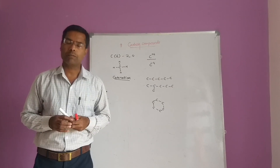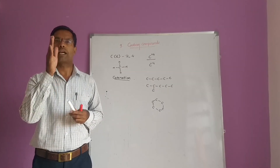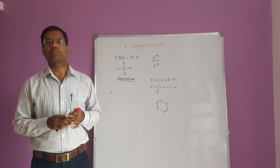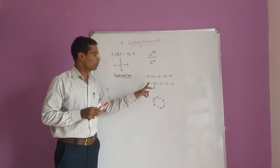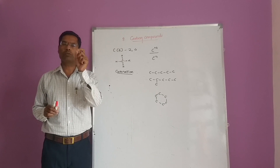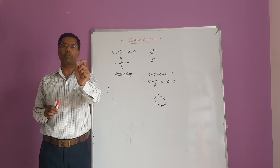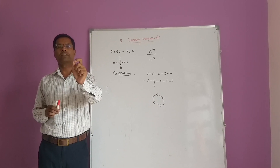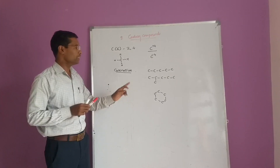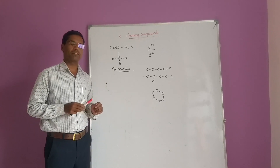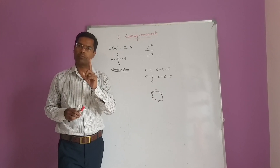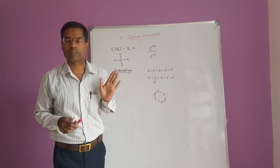What is catenation? It is the property of direct bonding between atoms of the same element to form long chains. Due to these two important properties - tetravalency and catenation - carbon can form a large number of compounds.